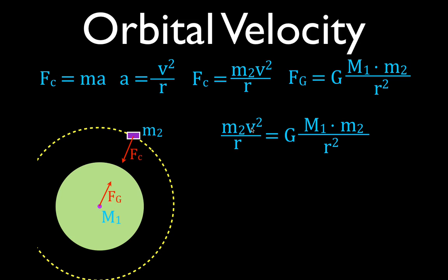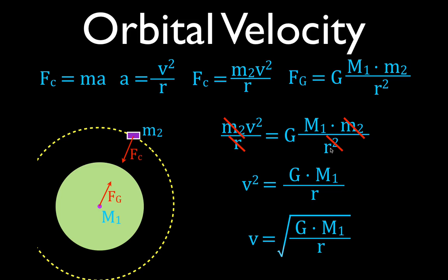That's how we get our orbital velocity. Taking the centripetal force equation and Newton's law of universal gravitation and setting them equal to each other, we notice M2 appears on both sides and can be canceled. Also, the radius appears once on one side and squared on the other, so we cancel one R from each side. We arrive at: velocity squared equals G times M1 divided by R. Taking the square root, V equals the square root of G times M1 divided by R. This is the equation we use to calculate the orbital velocity of an object.